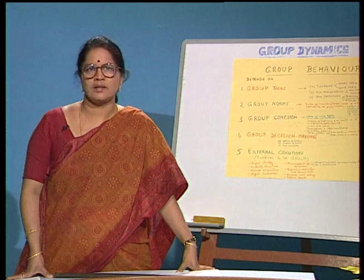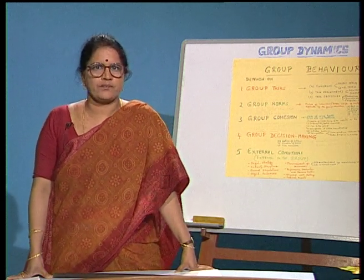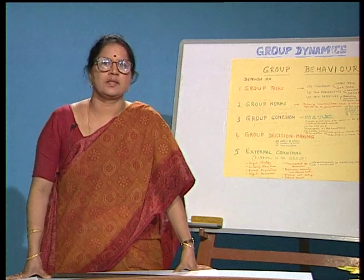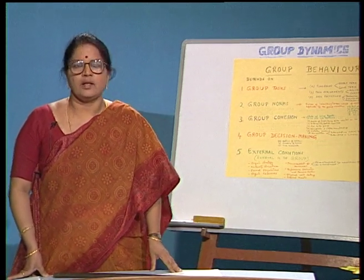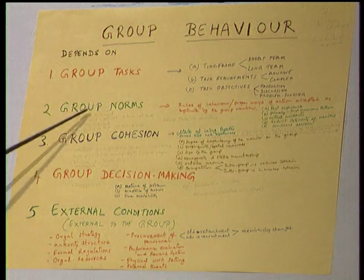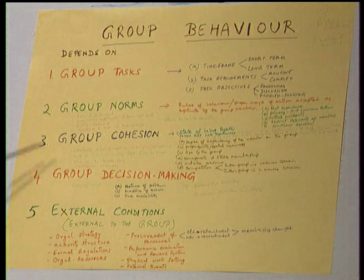In understanding group behavior, two aspects require special attention: social loafing and group think. Social loafing has an adverse effect on task accomplishment because each member thinks others will handle the workload and tries to avoid responsibility. Group think, on the other hand, is where all members think alike and even sacrifice personal demands for the organizational goal. Whether it is social loafing or group think, group behavior depends on: the group tasks, the group norms, the group cohesion, how group decision making takes place, and some external conditions.